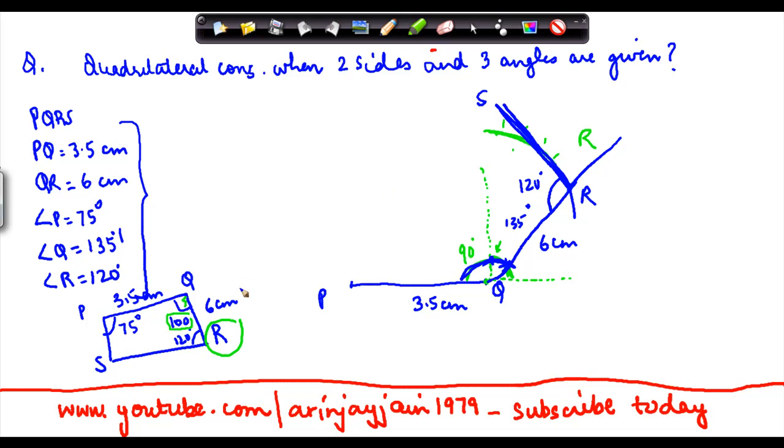But what you also know is that angle P equals 75 degrees. So if you draw an angle of 75 degrees from here and take it across to this line, you will find point S.